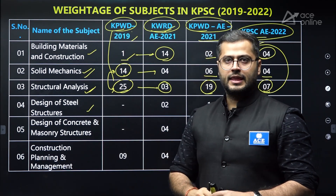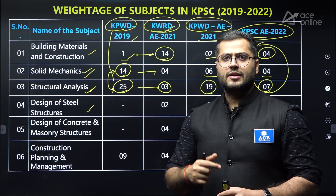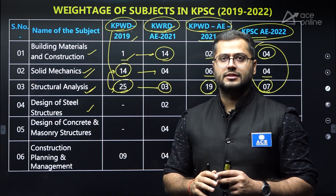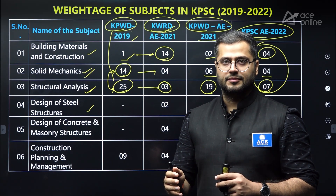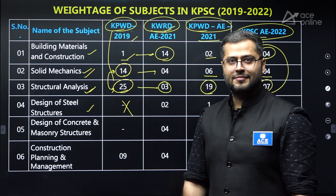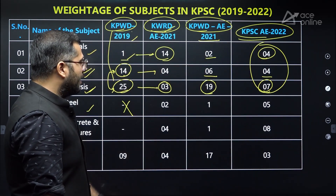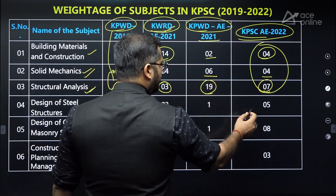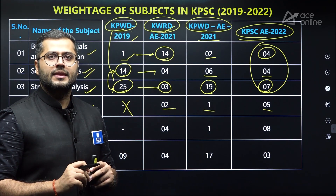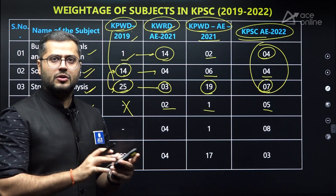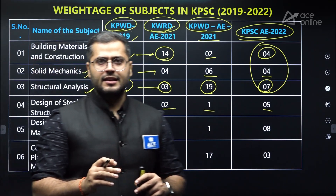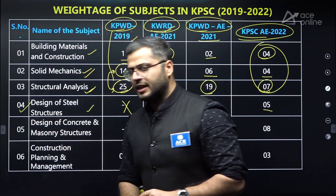Now comes design of steel structures. It holds very good importance in various Assistant Executive Engineer and Junior Engineer examinations, including engineering services examinations. But in KPWD, no question was asked in design of steel structures. In KWRD, KPWD, and KPSCA, very few questions were asked. So yes, you can think of leaving this subject — but not surely. If you want to score well, try to cover 100% of the syllabus. But if you are falling short, you can keep design of steel structures as one of your optional subjects.